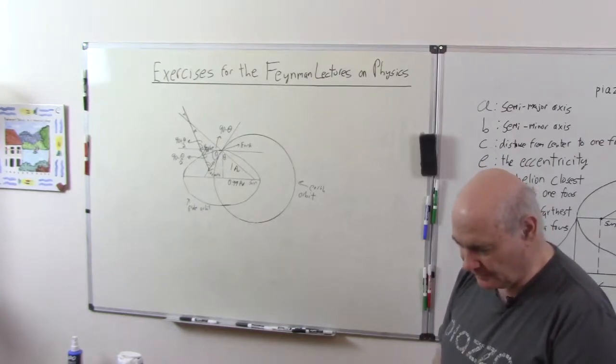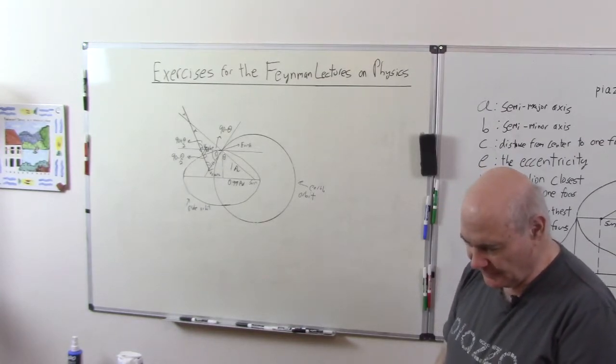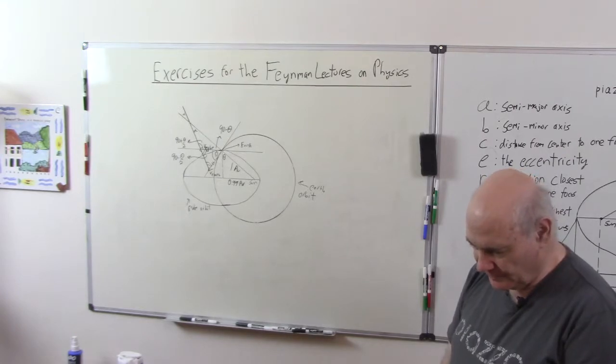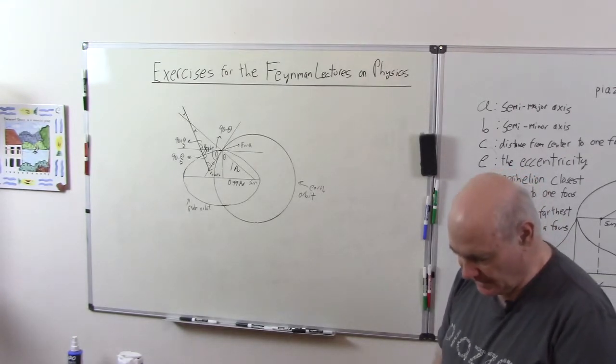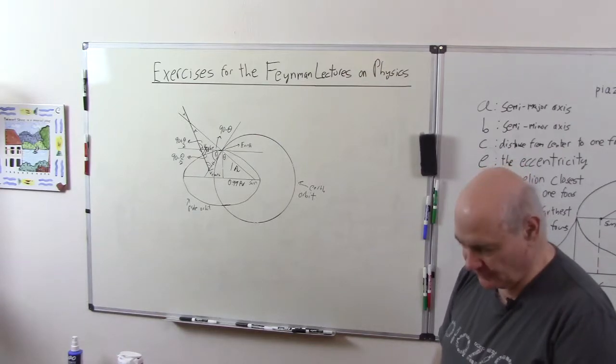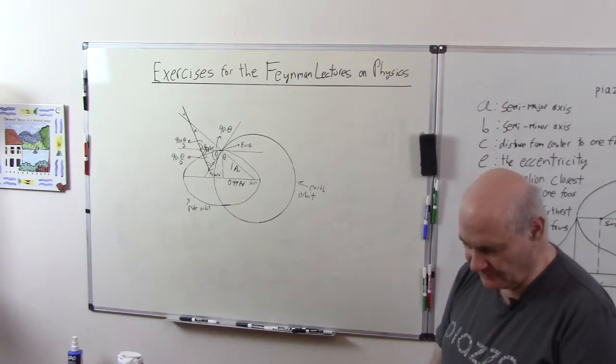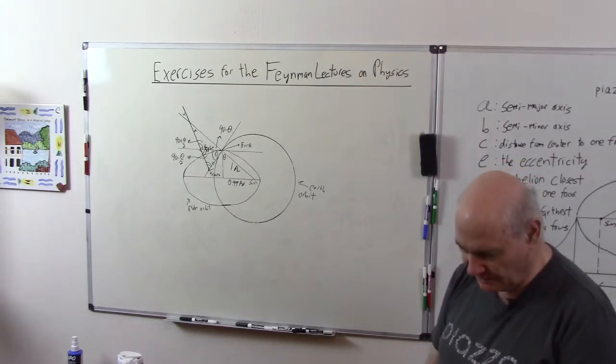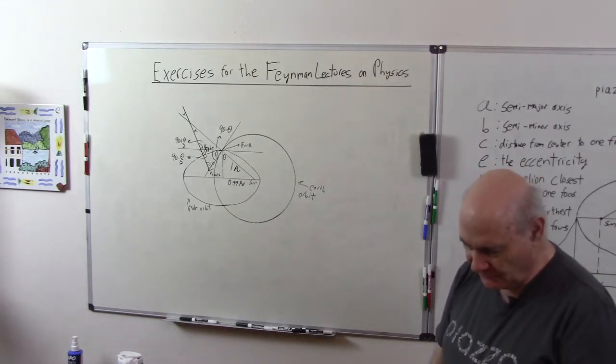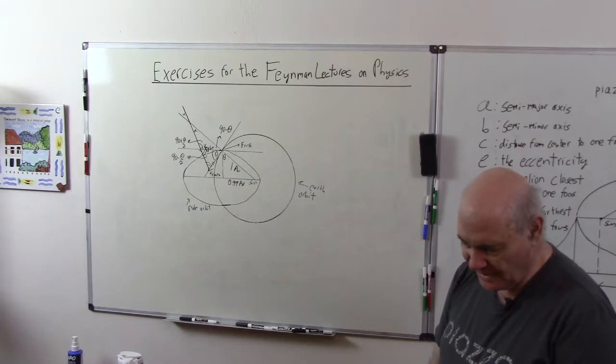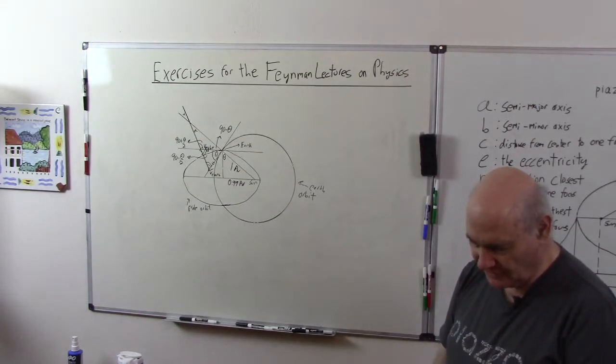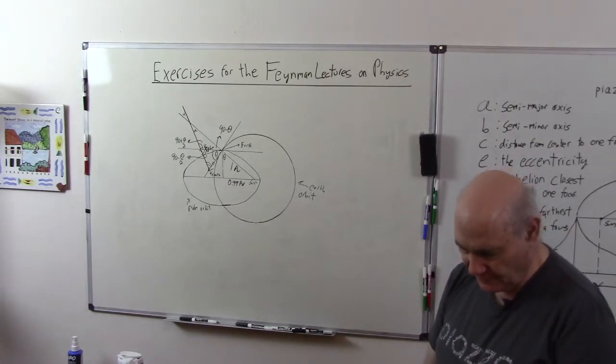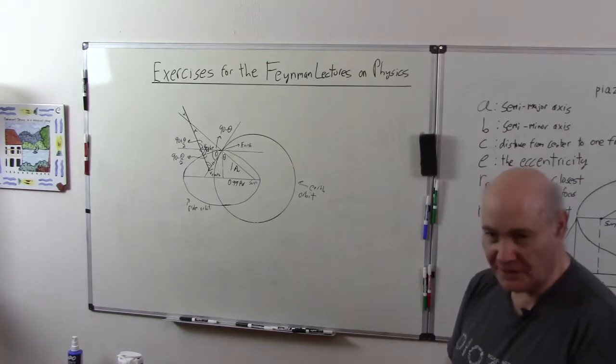The problem reads as follows. It's desired to send a solar probe into orbit with a perihelion distance of 0.01 AU and having the same period as Earth so that data recorded during the flight may be transmitted to Earth one year after the launching date. With what speed V0 and in what direction alpha relative to the Earth's sun line should the probe be launched from Earth? The orbital speed of the Earth is 30 kilometers per second.